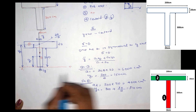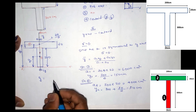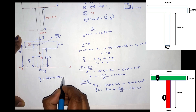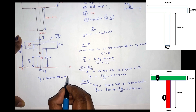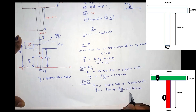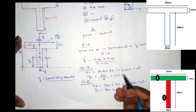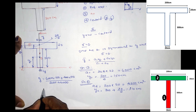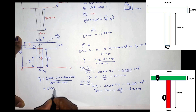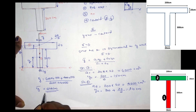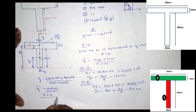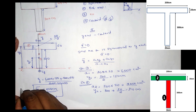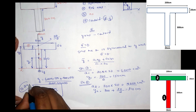Y-bar equals A1 times y1 plus A2 times y2, divided by A1 plus A2: that is 6,000 times 150 plus 4,000 times 310, divided by 6,000 plus 4,000. The answer is y-bar equals 214 cm. So the centroid coordinates are x-bar equals 0, y-bar equals 214 cm — the centroid is at (0, 214).